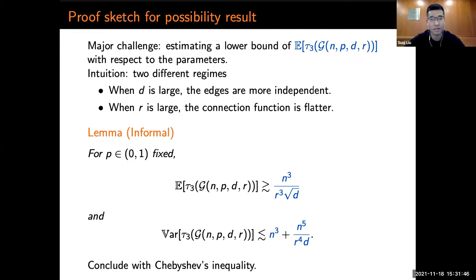By implementing this using various techniques, including Stein's lemma, Gaussian hypercontractivity, and other techniques, we arrive at the following lemma. The expected number of signed triangles in G(n,p,d,R) is lower bounded by this quantity, and the variance is upper bounded by this quantity. Then the proof can be concluded by applying Chebyshev's inequality.